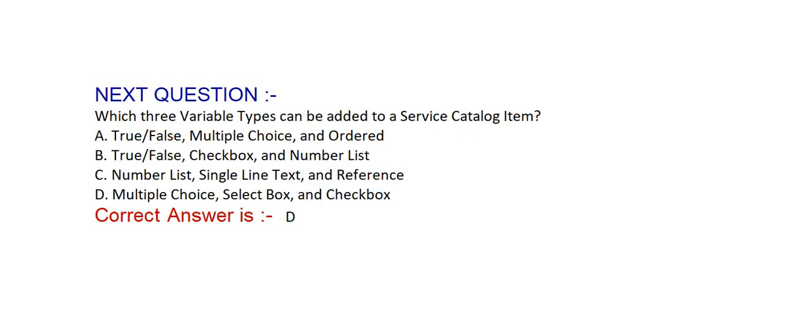Next question: Which three variable types can be added to a service catalog item? Option A: true/false, multiple choice, and ordered. Option B: true/false, check box, and number list. Option C: number list, single line text, and reference. Option D: multiple choice, select box, and check box.